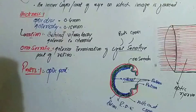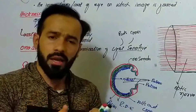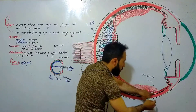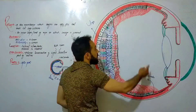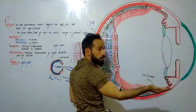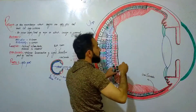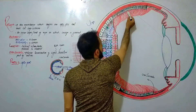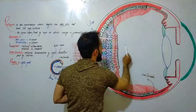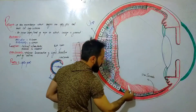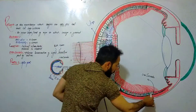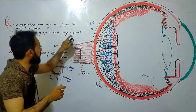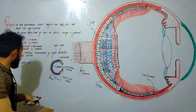The optic part of the retina is the actual retina which receives the light and generates action potentials. At the ora serrata, the rods and cones will stop and will not go forward. So wherever the part of the retina contains rods and cones, that will generate action potentials and at that point the image will be formed. That is the optic part of the retina.